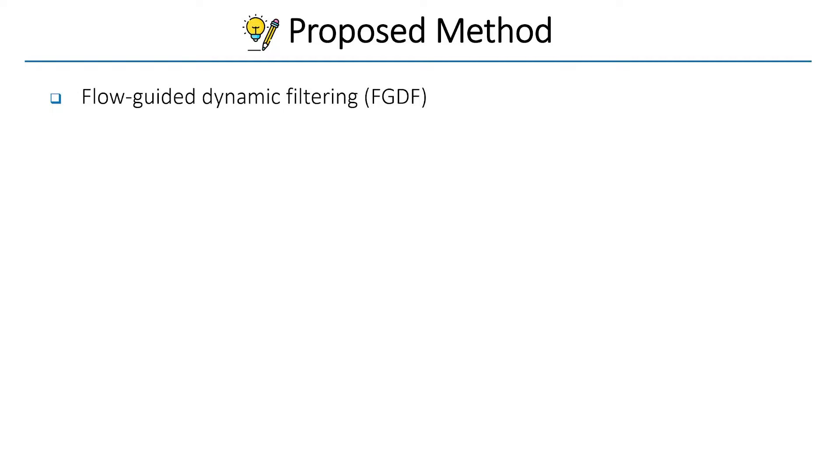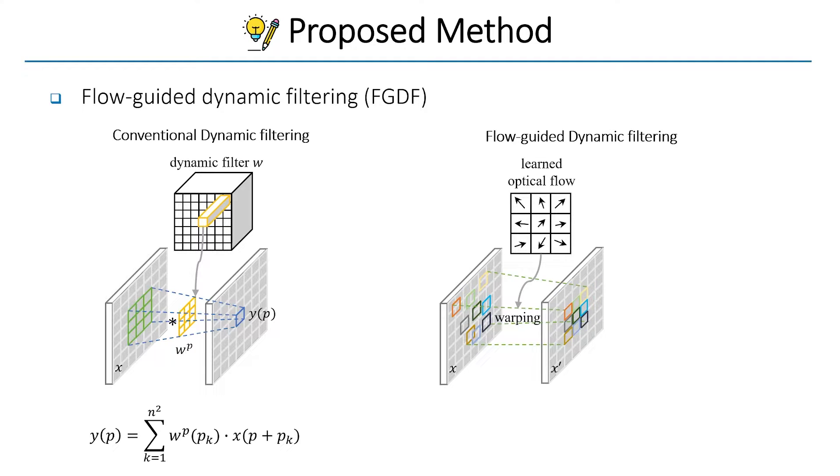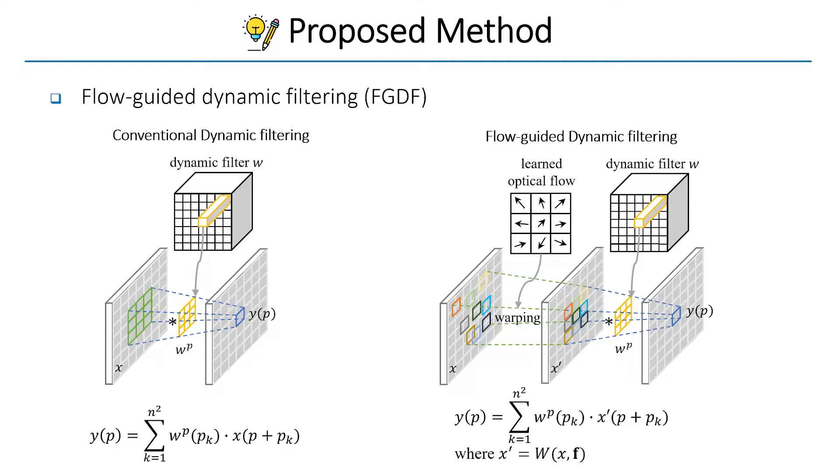Flow-guided dynamic filtering combines optical flow with dynamic filtering. While conventional dynamic filtering applies filtering to location P with its fixed neighbors, requiring large-sized kernels to capture large motion, our flow-guided dynamic filtering constructs optimal locations and neighbors using learned optical flow, enabling effective capture of large motion even with small-sized kernels.